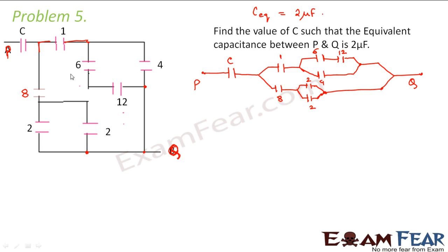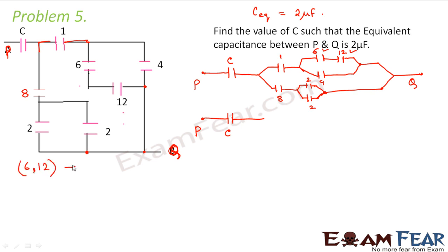Now you tell me which is simpler — the first circuit or the second circuit which you drew? The second circuit makes it very clear which is in series and which is in parallel. If you see here, 6 and 12 are in series. So let us start calculating in the figure itself.